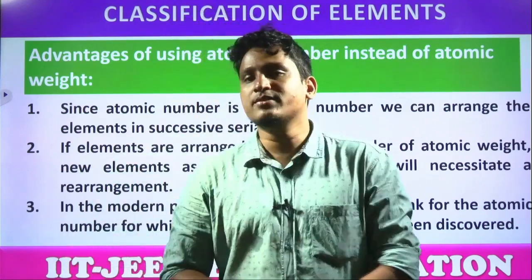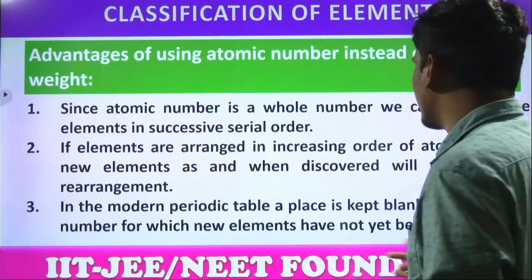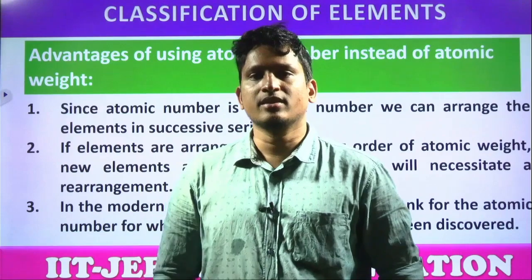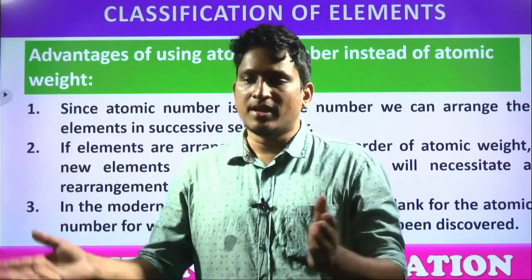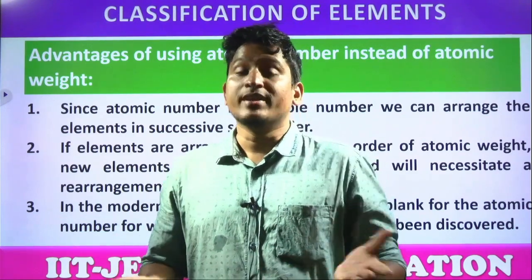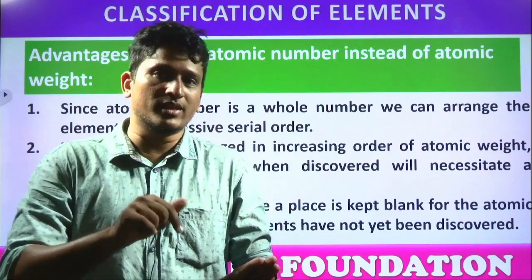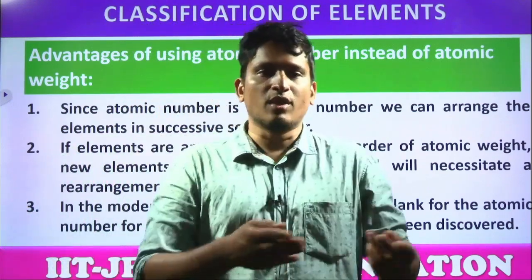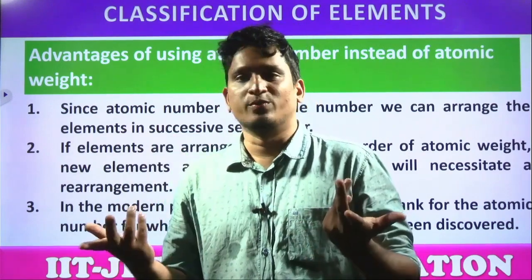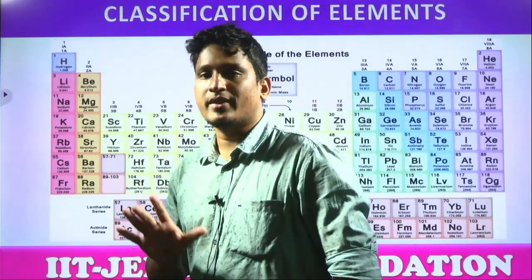So that is why the best way to classify is according to atomic numbers. In the modern periodic table, a place is kept blank for the atomic number for which new elements have not been discovered. For example, if element with atomic number 100 is classified and 101 is not yet discovered, we can give a separate space — because with atomic numbers we already know element 101 must exist. With atomic mass values like 12.5 or 13.4 grams, we would have no such idea.